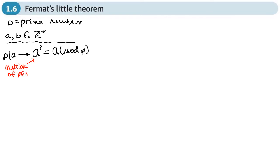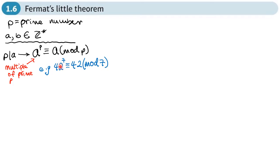Here's an example: 42 to the power 7 is congruent to 42 mod 7. Here my prime P is 7 and a, which is 42, is a multiple of 7 — in other words 7 divides into 42. So that's the first rule.